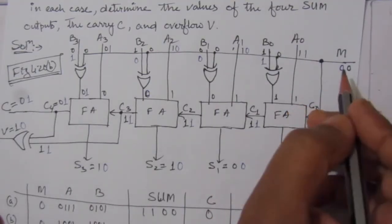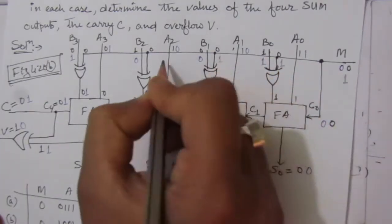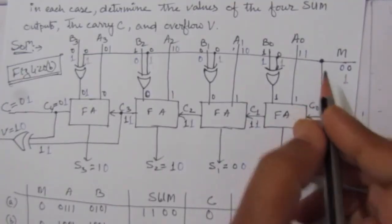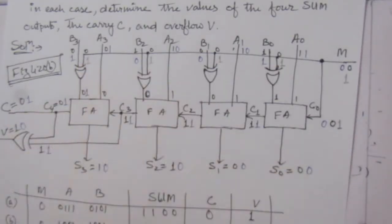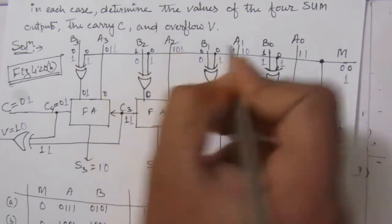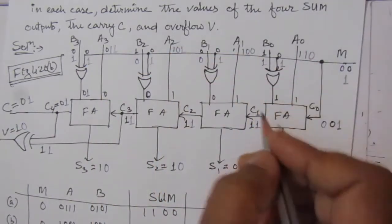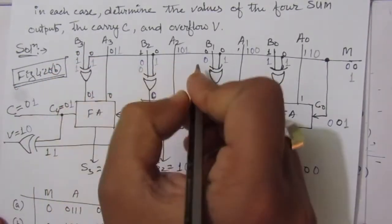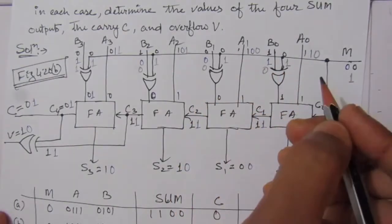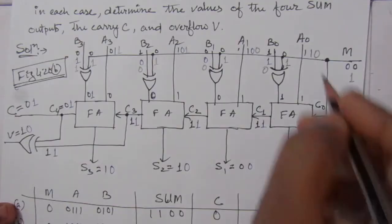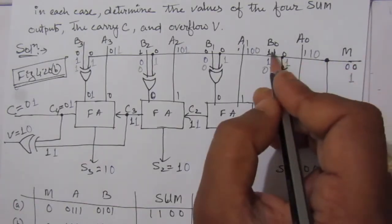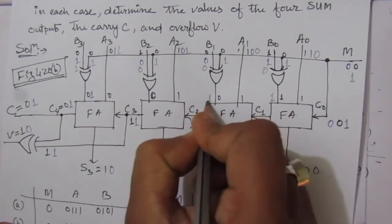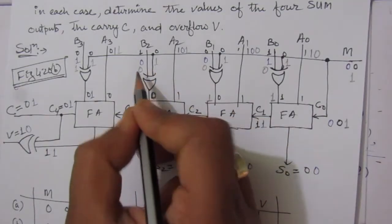In the third case, M is equal to 1, so 1 is applied to all XOR gates. The A value is 1100 and the B value is 1000. Since M=1, the B inputs are inverted at the XOR gates: B=0 becomes 1, B=0 becomes 1, B=0 becomes 1, and B=1 becomes 0.